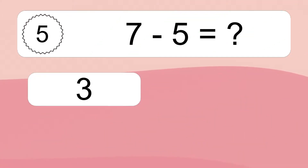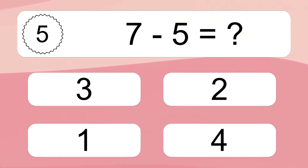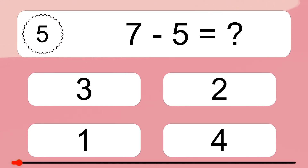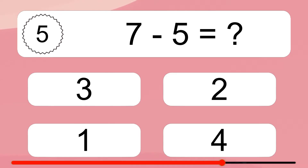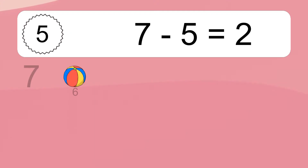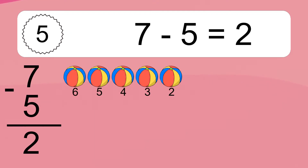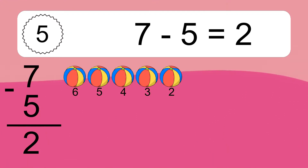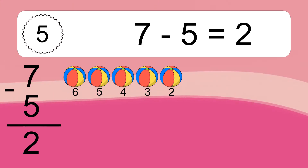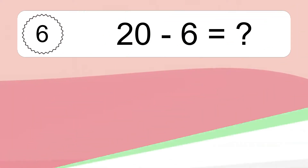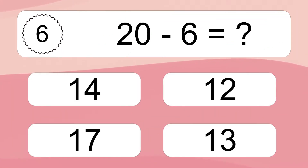7 minus 5 equals what? 7 minus 5 equals 2. Let's count it. 6, 5, 4, 3, 2.